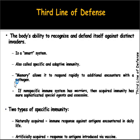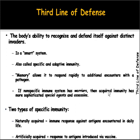After specificity, the next important feature of the third line of defense is the memory response. On exposure to the same antigen a second time, our body generates a heightened response because we already have saved activated B cells or T cells. The response generated on second exposure is of quite high intensity. We can say the non-specific immune system is like warriors with basic weapons, while the third line of defense is like assassins with highly sophisticated instruments.